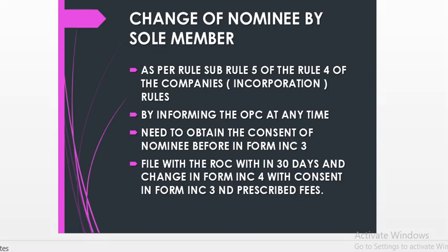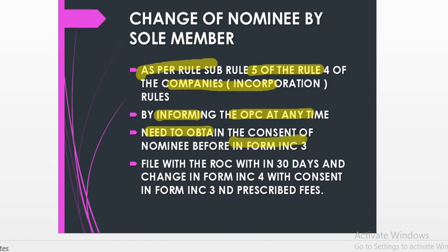In case of a one person company, the nominee clause can be changed as per sub-rule 5 of Rule 4 of the Companies Incorporation Rules. By informing the one person company at any time, the sole member can change the nominee. They have to obtain the consent of the new nominee in Form INC-3, and file the change with the Registrar of Companies within 30 days along with the consent of the new nominee in Form INC-3 and the prescribed fees.